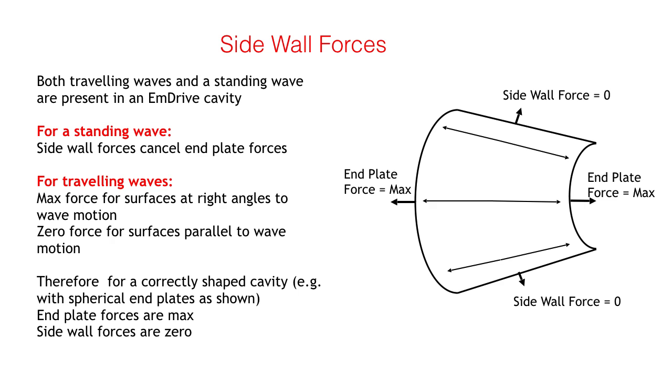The question that is always raised is that surely the difference in end plate forces is balanced out by the force on the sidewall of the cavity. It's important to understand that the field structure within the cavity is the superposition of a standing wave varying with time, and multiple traveling waves varying with both time and position. For the standing wave, which is itself a result of the traveling waves varying in phase, the sidewall force does indeed cancel out the end plate forces. However, for a traveling wave, the maximum force is achieved when the wave front is reflected at right angles to the end plate. In a well-designed cavity, the traveling waves are moving parallel to the cavity wall at the wall surface, and the force is therefore zero. So the thrust is due only to the end plate forces.